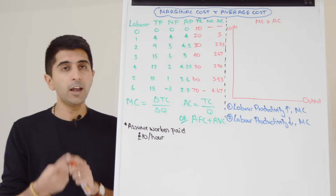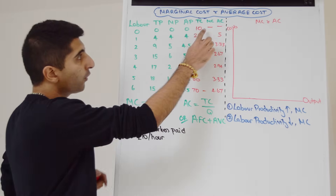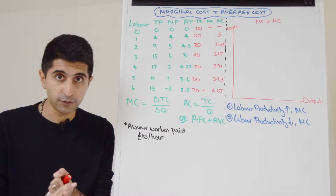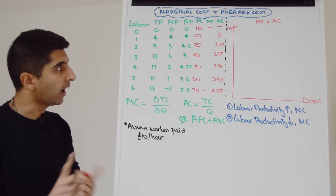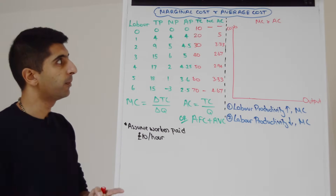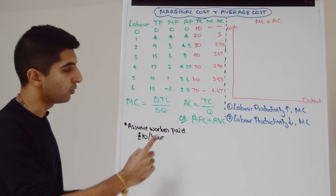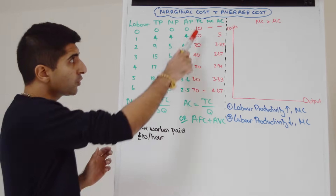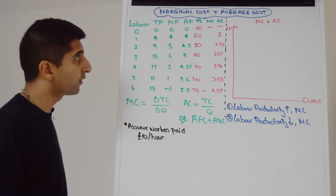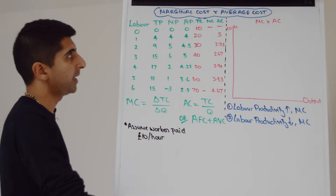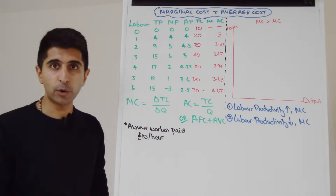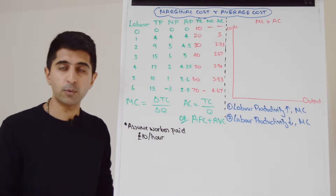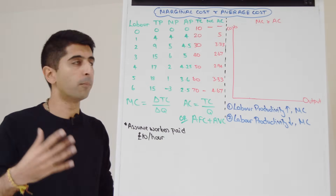A couple of things we need to know first. If total costs are 10 when nothing is being produced, that means there are £10 worth of fixed costs that always have to be paid regardless of the level of output being produced. We're also going to assume that workers are paid an hourly wage of £10. So that explains all the numbers in the total cost column, and why each time we're adding 10 — we always have £10 of fixed costs and then £10 more in wages whenever we employ one more worker.